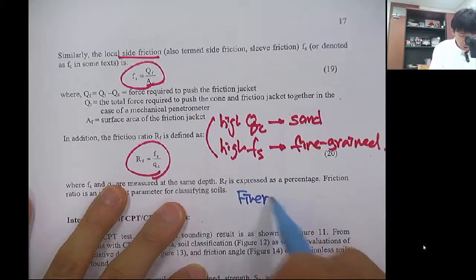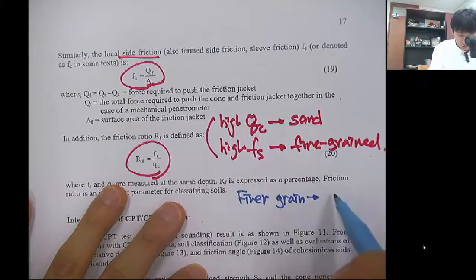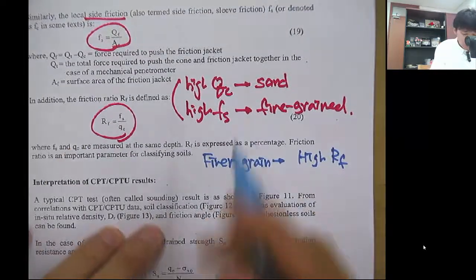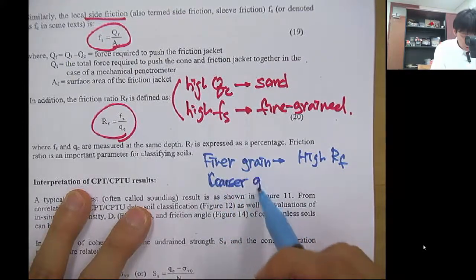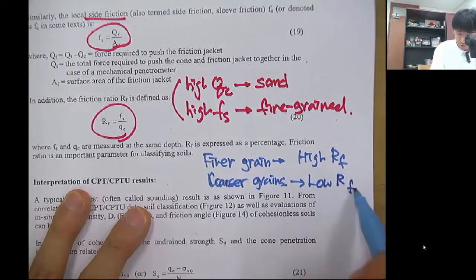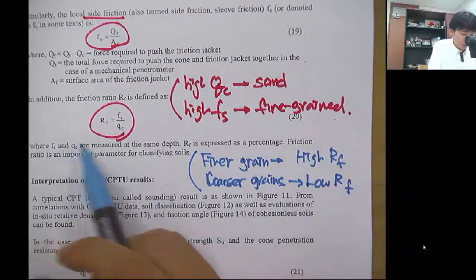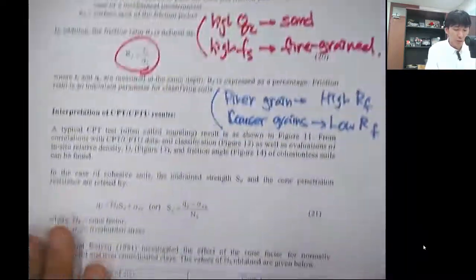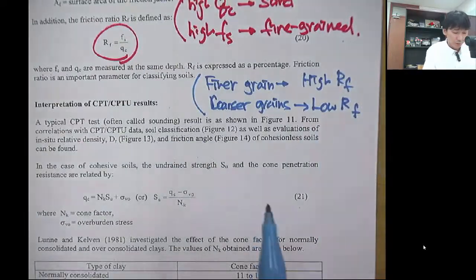In terms of the friction ratio, as you have finer grains, high RF, and coarser grains, you get low RF. Using this kind of side friction ratio, the friction ratio, and these two values, you can identify the soil layers. It can also be correlated to soil classification.